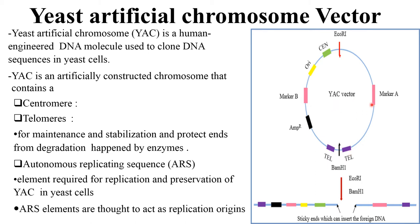YAC is an artificially constructed chromosome that contains a centromere and telomere regions for maintenance and stabilization, and to protect the ends from degradation by enzymes. It consists of an Autonomous Replicating Sequence, also called ARS. This element is required for the replication and preservation of YAC in the yeast cells.